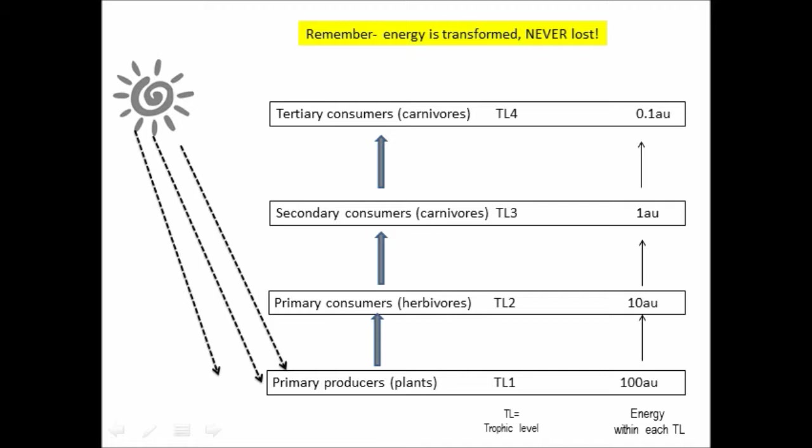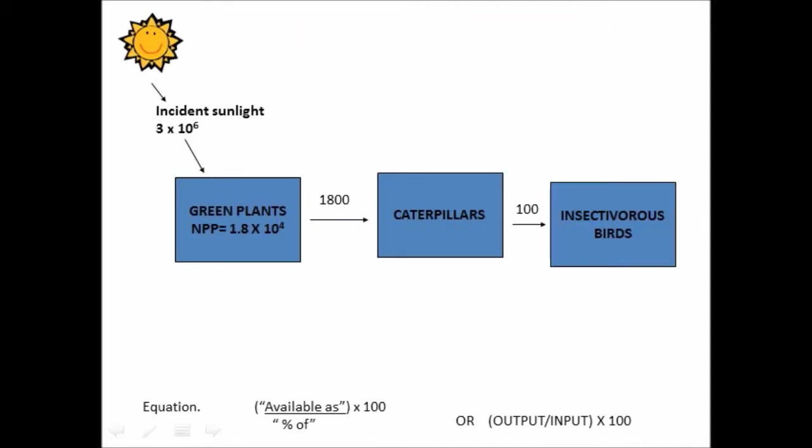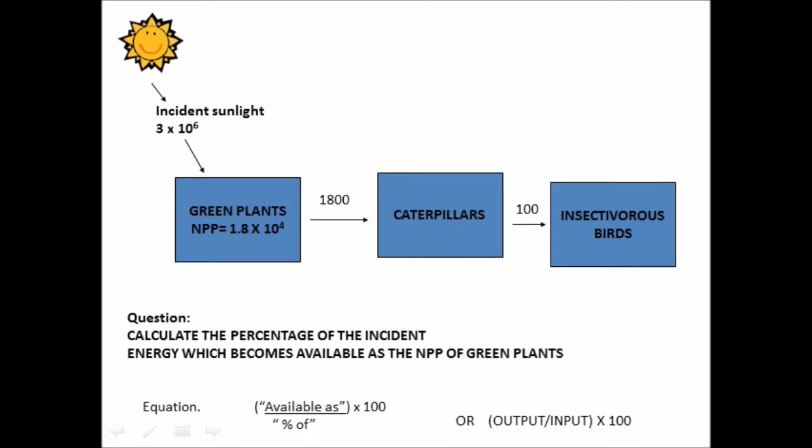Now one of the things you need to be able to do is to carry out fairly simple energy flow calculations. So I'm just going to go through one or two examples. And there should be some more examples appearing on Moodle shortly for you to practice on. The percentage of energy which becomes available as the net primary production of green plants. So what percentage of 3 by 10 to the 6 becomes available as the net primary production? That's 1.8 by 10 to the 4 of plants.